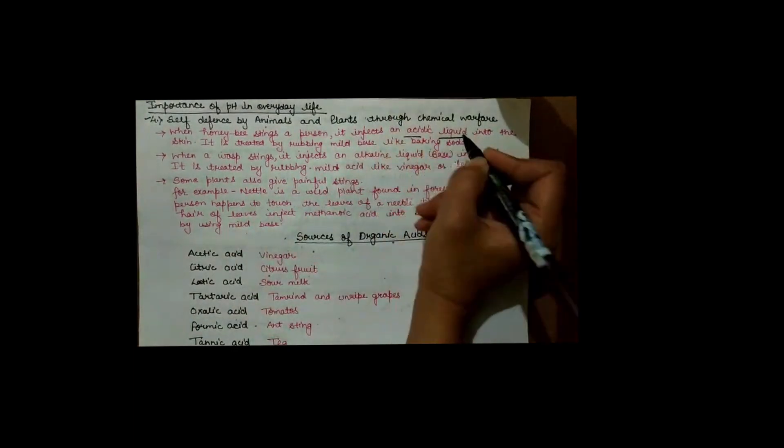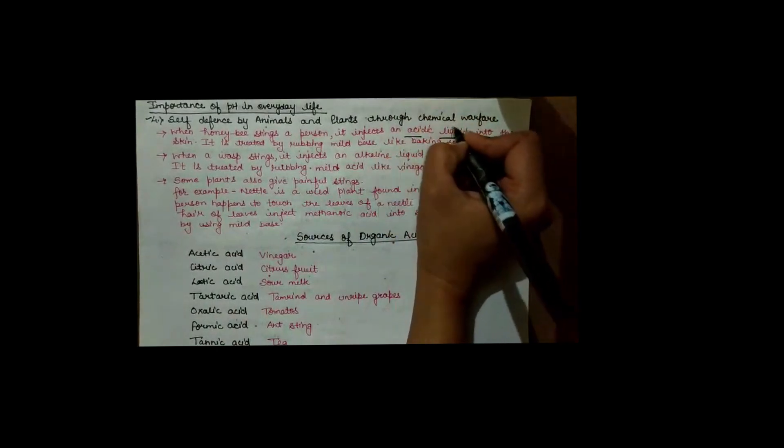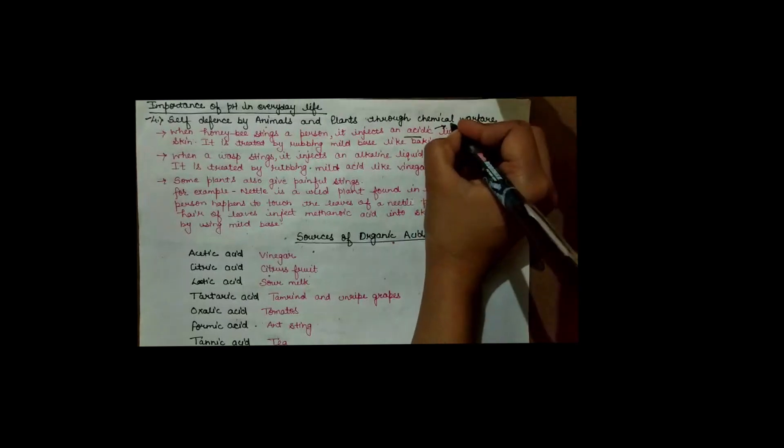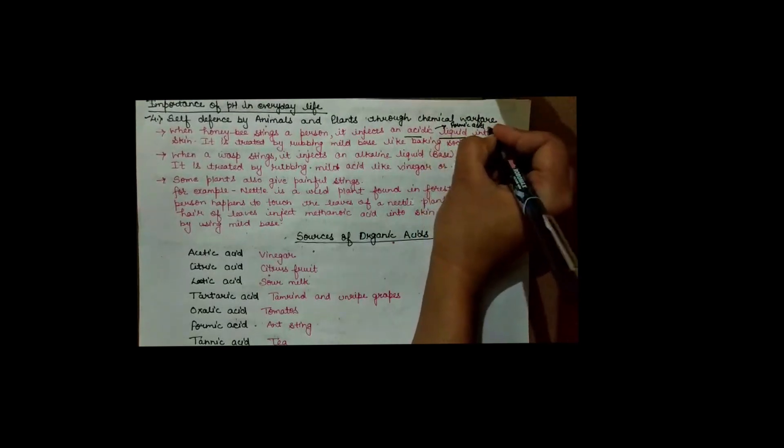Many animals and plants protect themselves from their enemies by injecting painful and irritating acids and bases into their skin. For example, when a honeybee stings a person, it injects an acidic liquid into the skin. The name of this acidic liquid is formic acid, also known as methanoic acid.